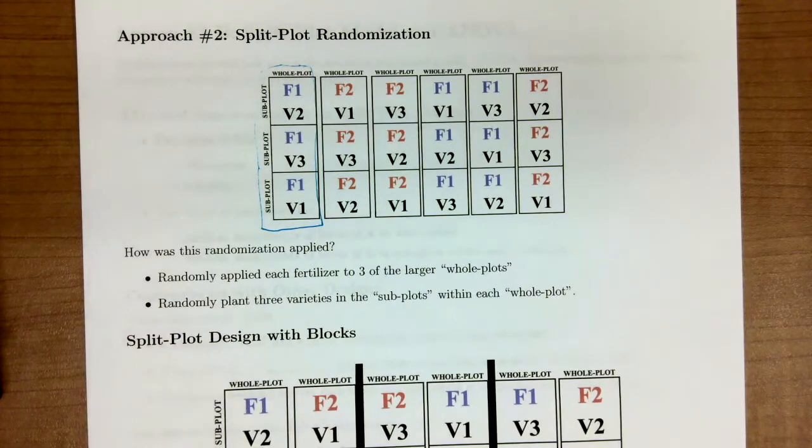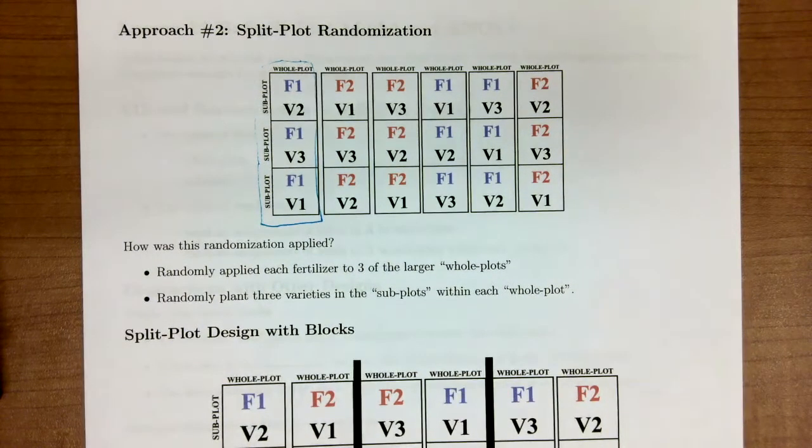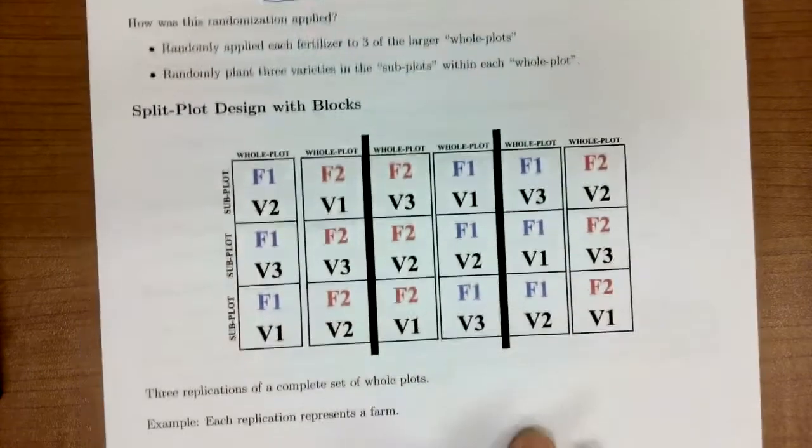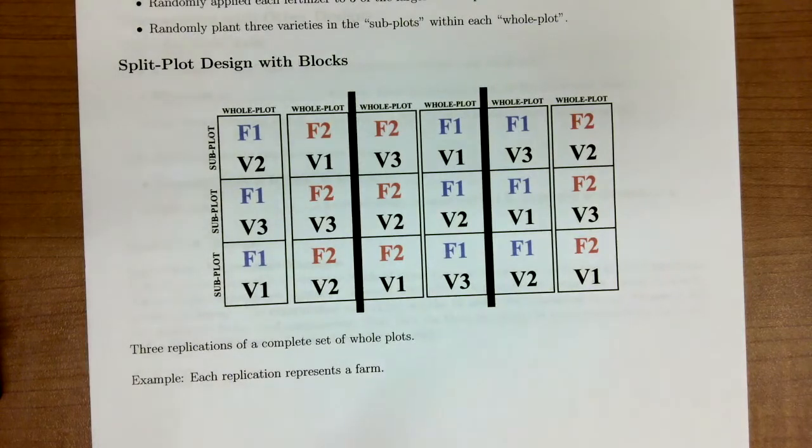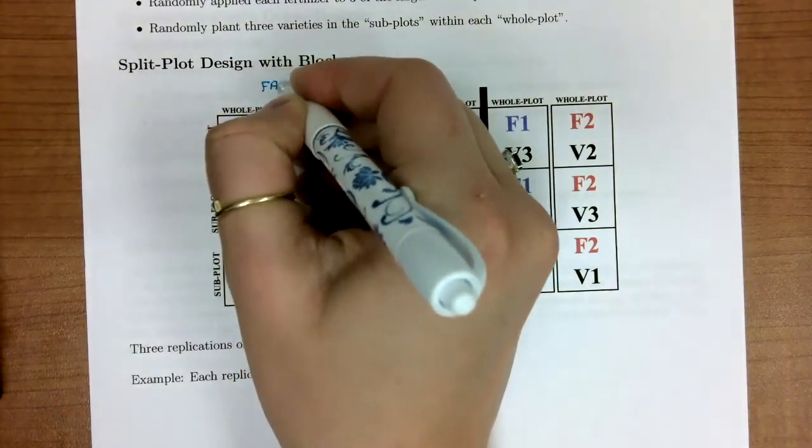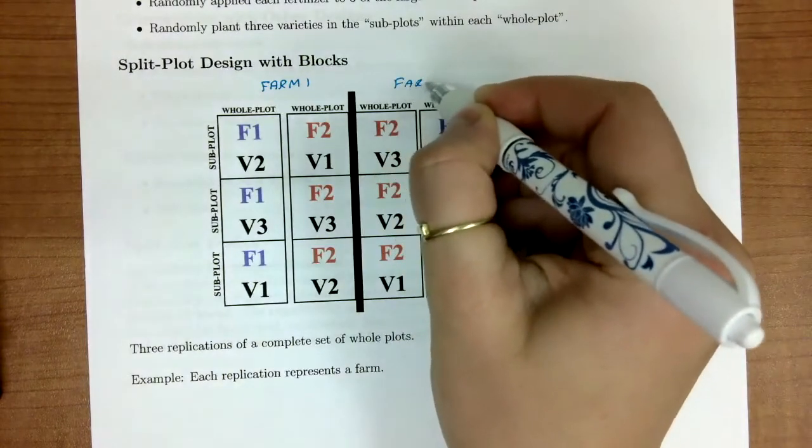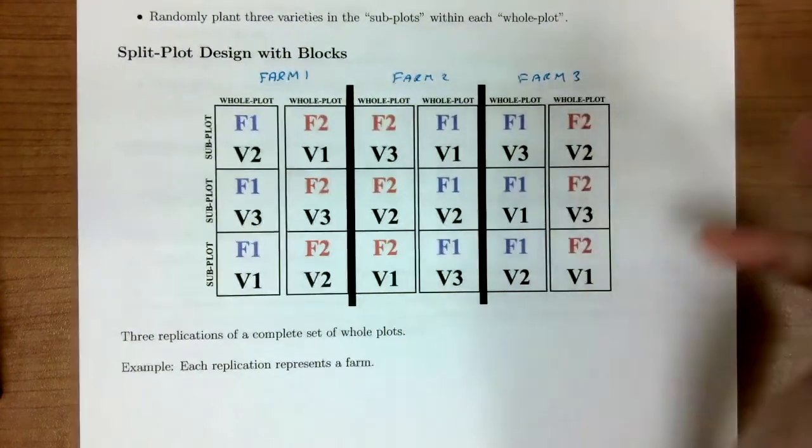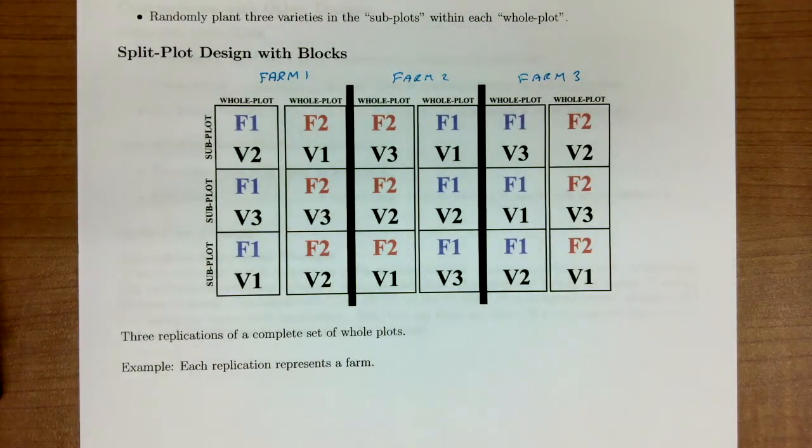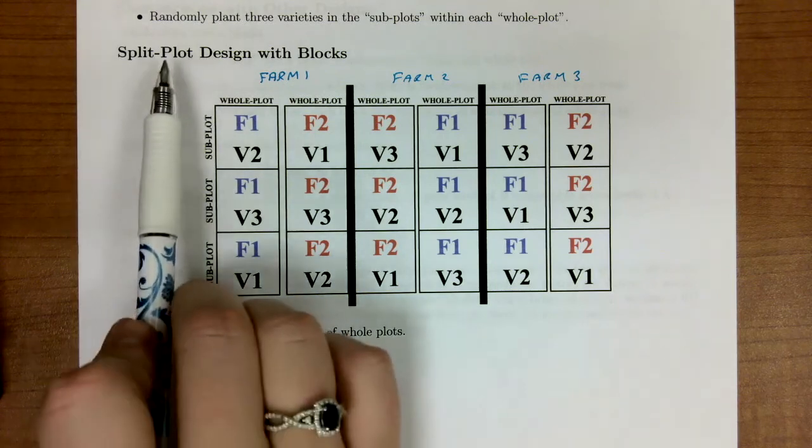We can also extend this idea to include blocks. Maybe our farmer has land in London and Virginia Beach and some other place. So we want to block by where his farms are. Maybe this is block one and farm one. Here would be farm two and here would be farm three. We're going to block because we know that these three farms have different potential for different sources of variability in our design. Notice that each block is going to have a complete set of whole plots. What I mean is that we see each treatment combination once. So our farms or our blocks are also acting as our replicates.